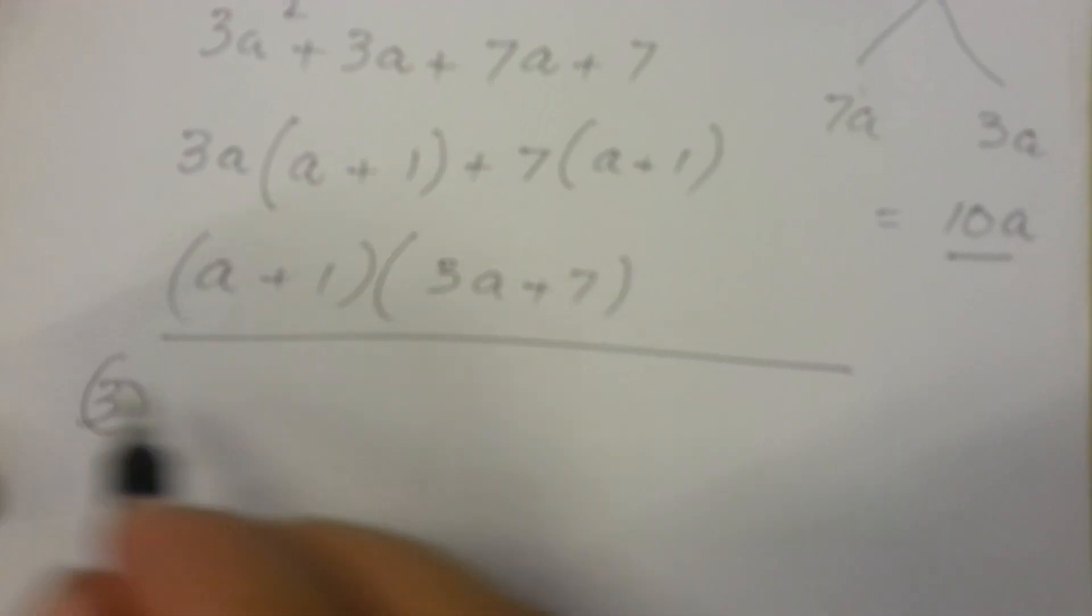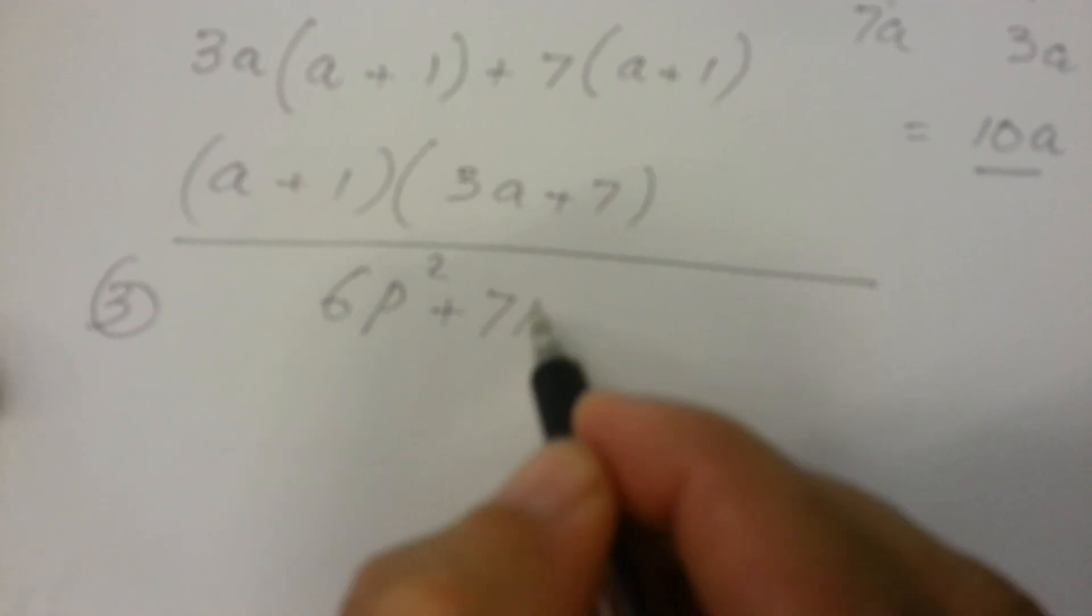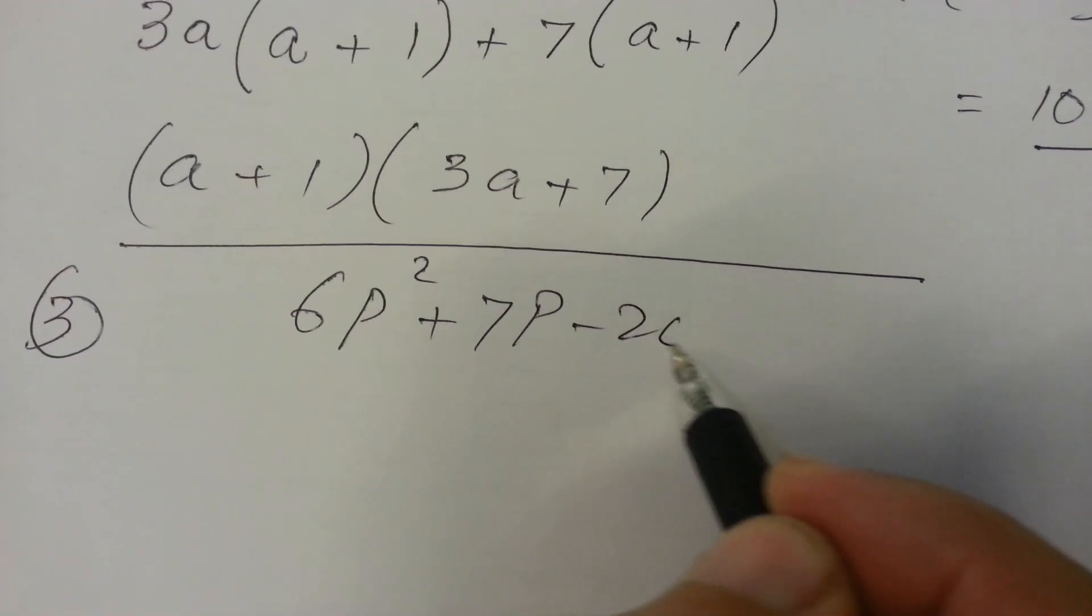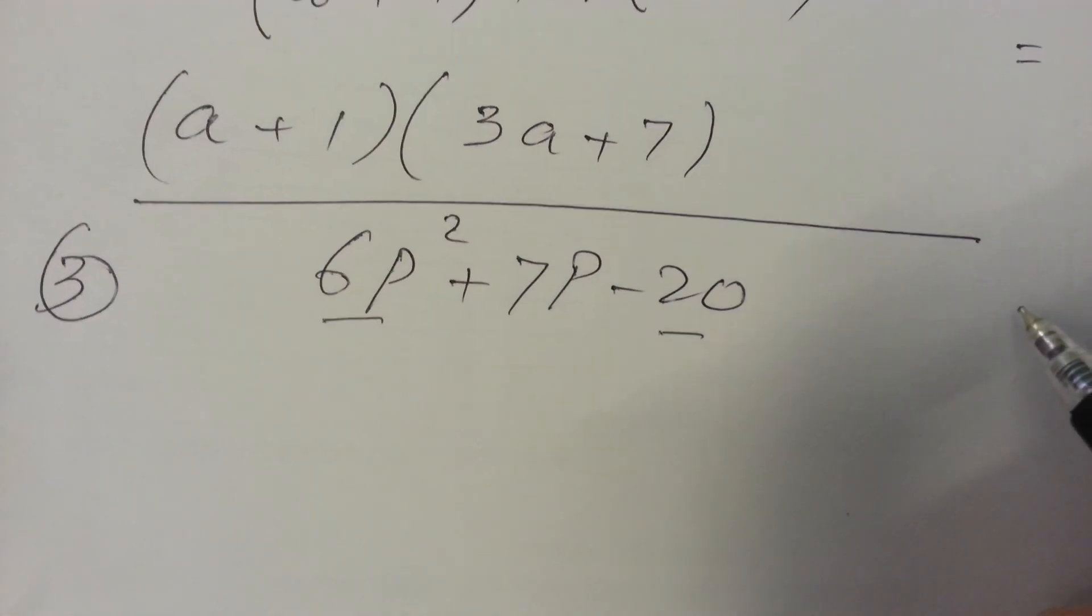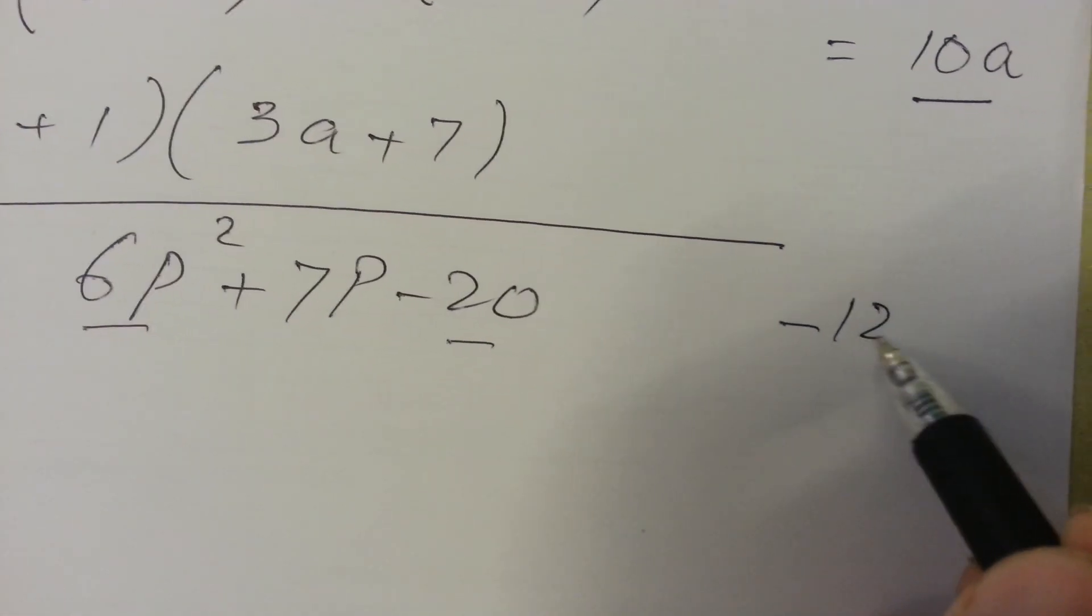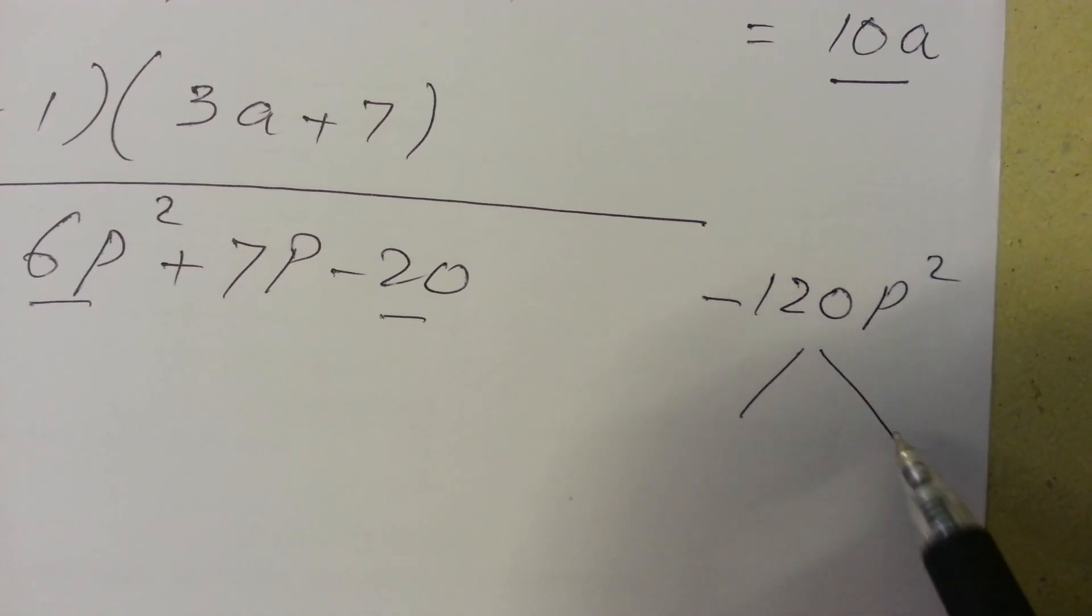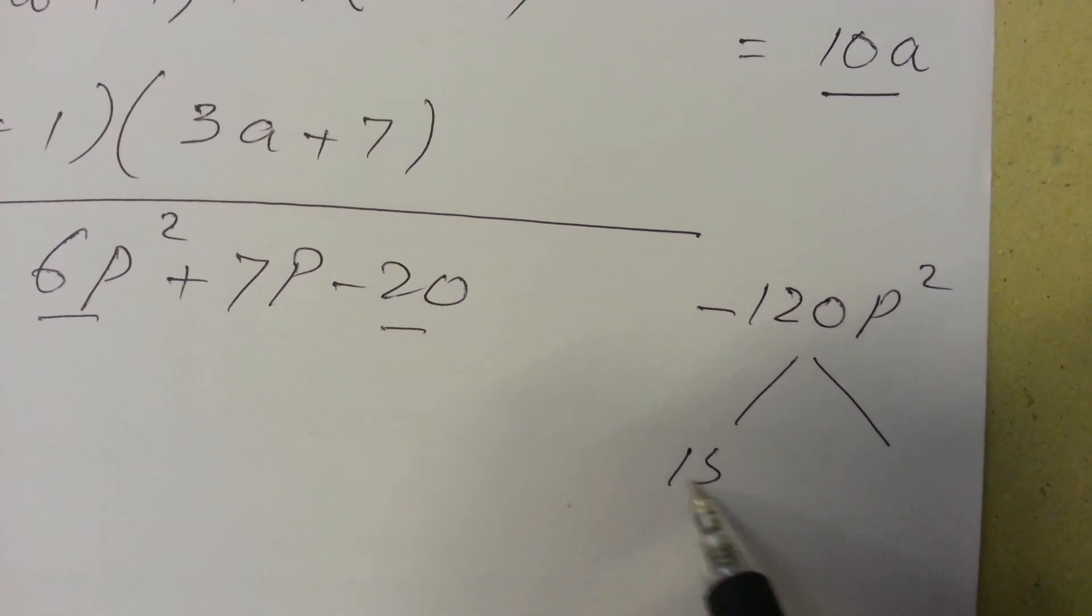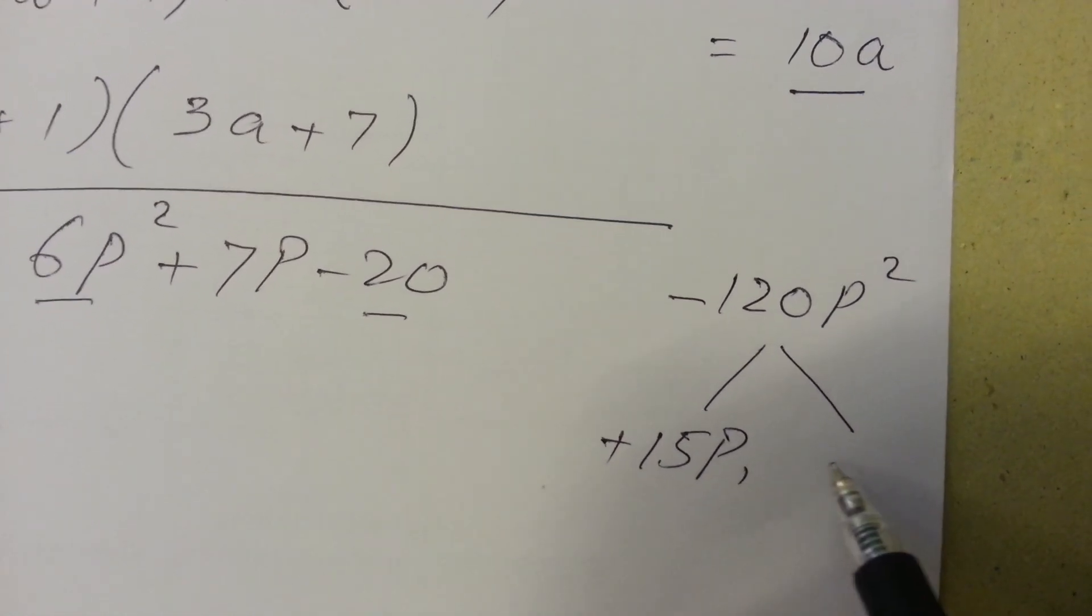Question number 3: 6p² + 7p - 20. On multiplying the first and the last term, we will get -120p². Now we have to separate into two which is 15p and the other will be -8p because we want 7p.